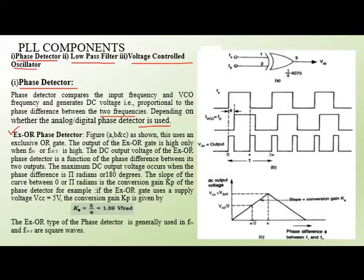In the XOR gate phase detector, shown in figures A, B, and C, the output of the XOR gate is high only when one of the inputs is high — that is, when any one of the frequencies is high, the output of the XOR gate is high. When F-in is high and F-out is low, the output of the XOR gate is high. When both F-in and F-out are high, the output of the XOR gate is low.